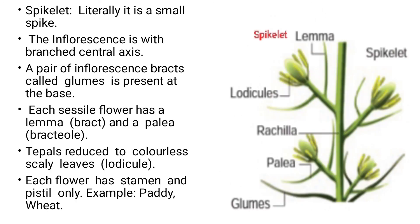Spikelet is literally like a small spike. The central axis is seen in the inflorescence, with a pair of bract-like structures at the base called glumes. Each sessile flower has a lemma and a palea. The tepals are colourless and scaly, called lodicules. Each flower has a stamen and a pistil. Example: paddy.